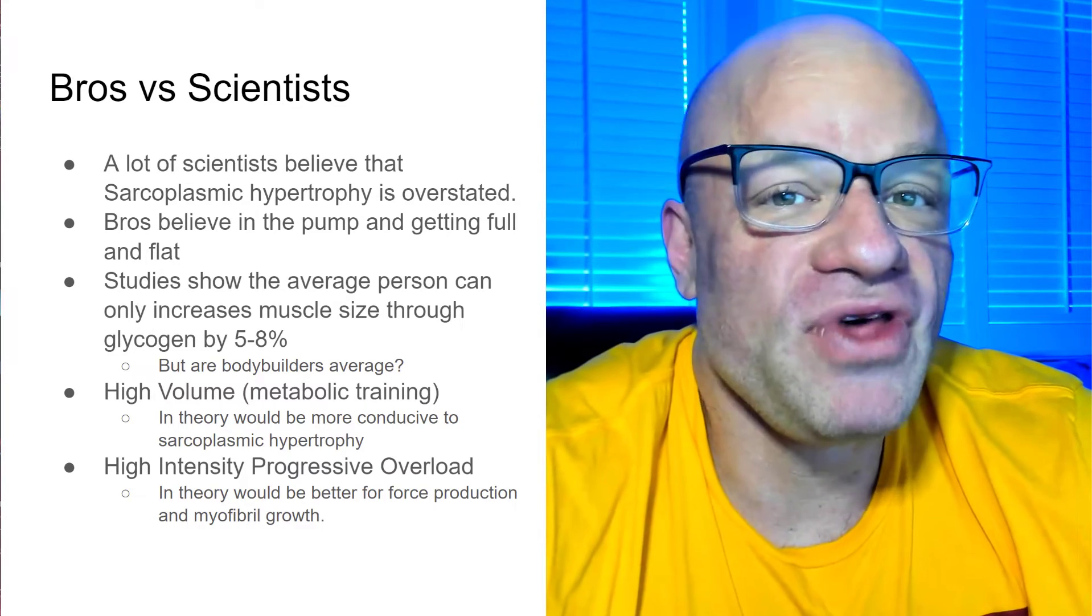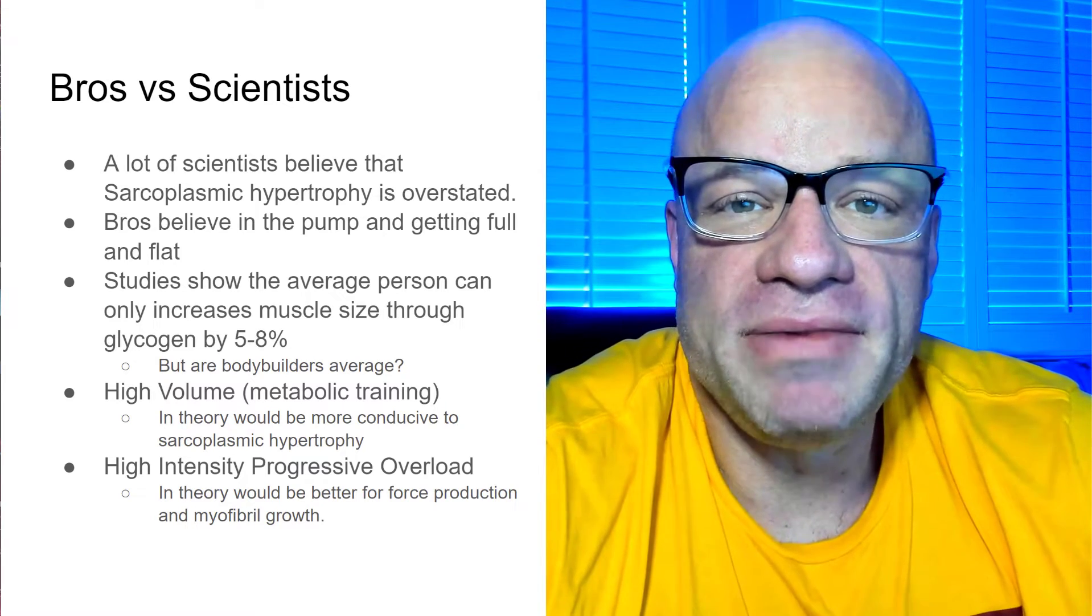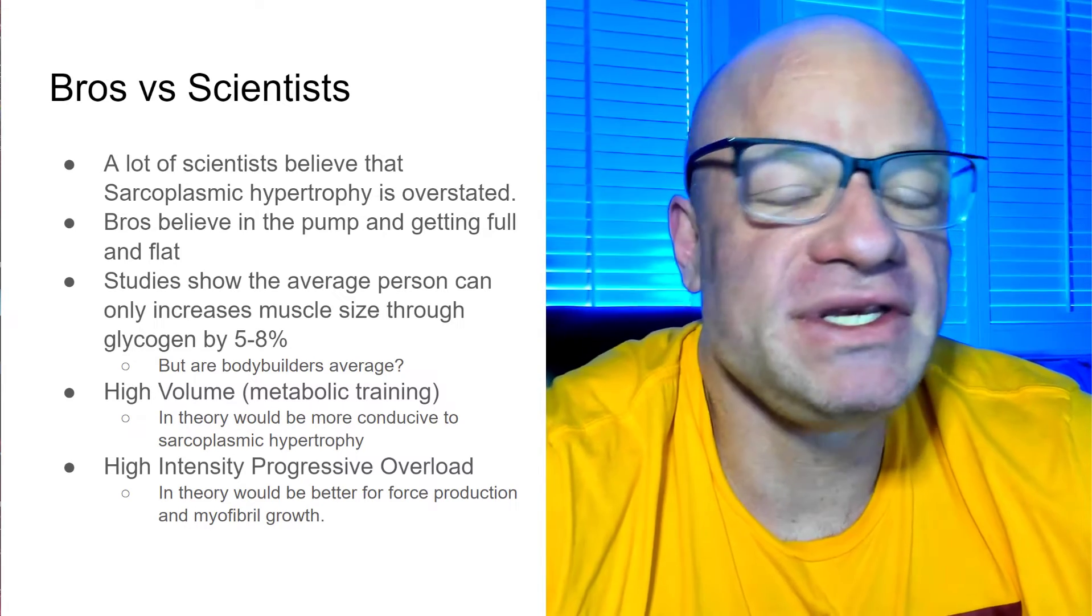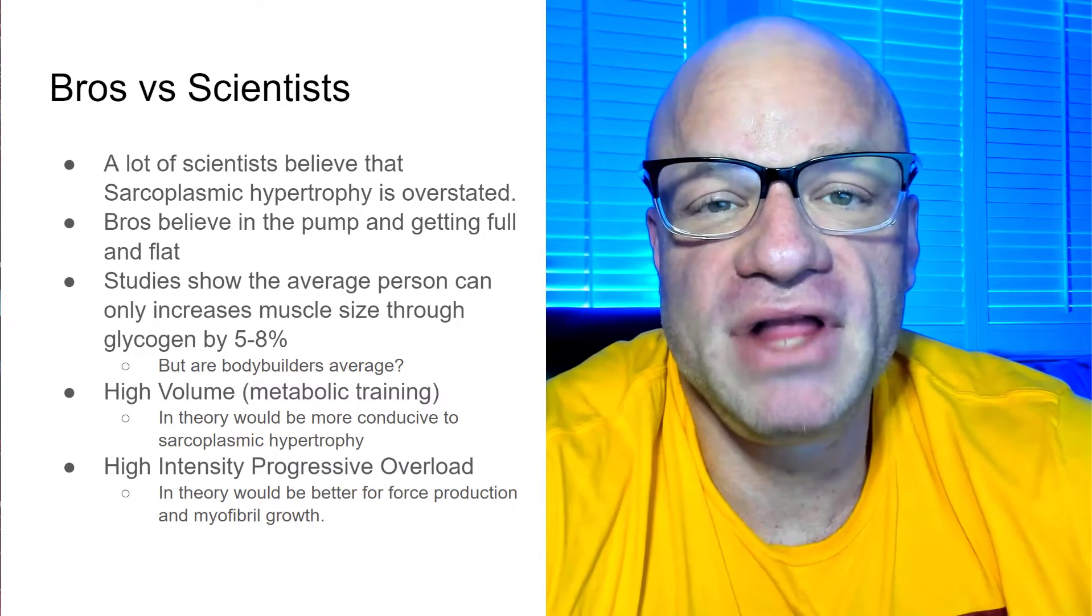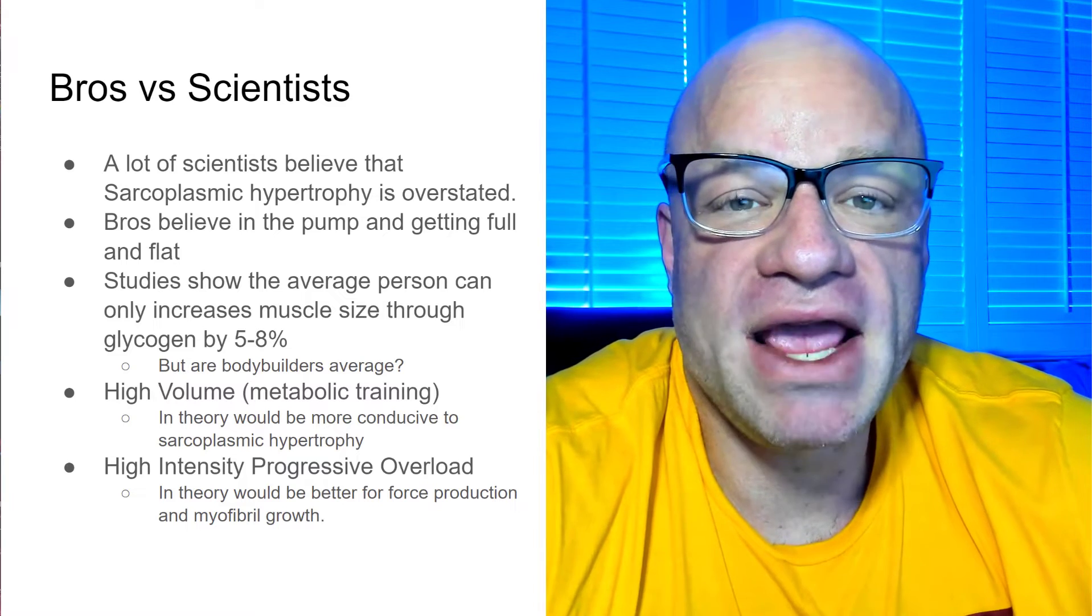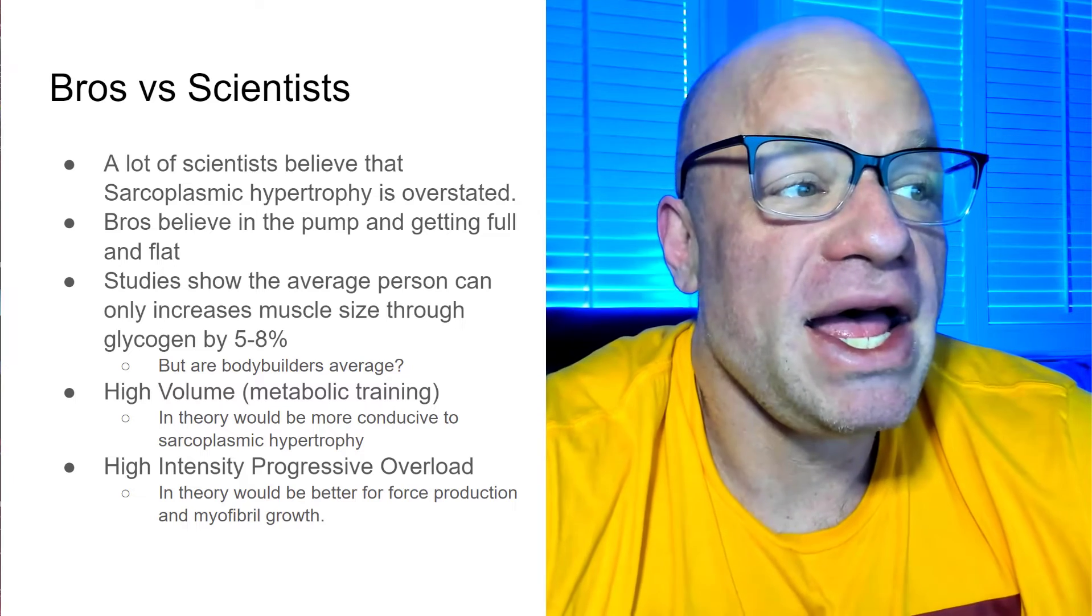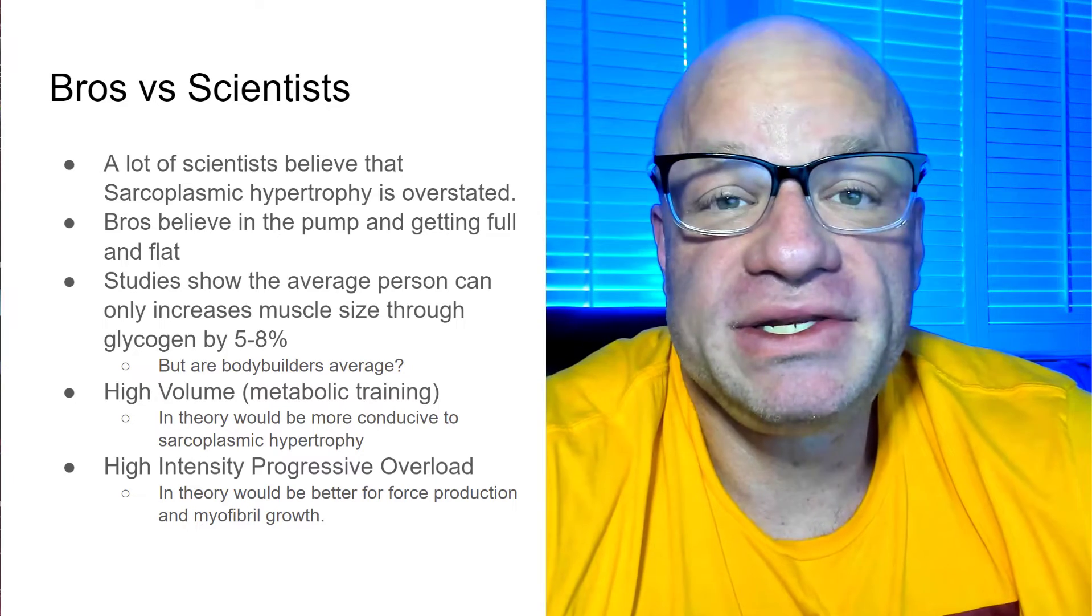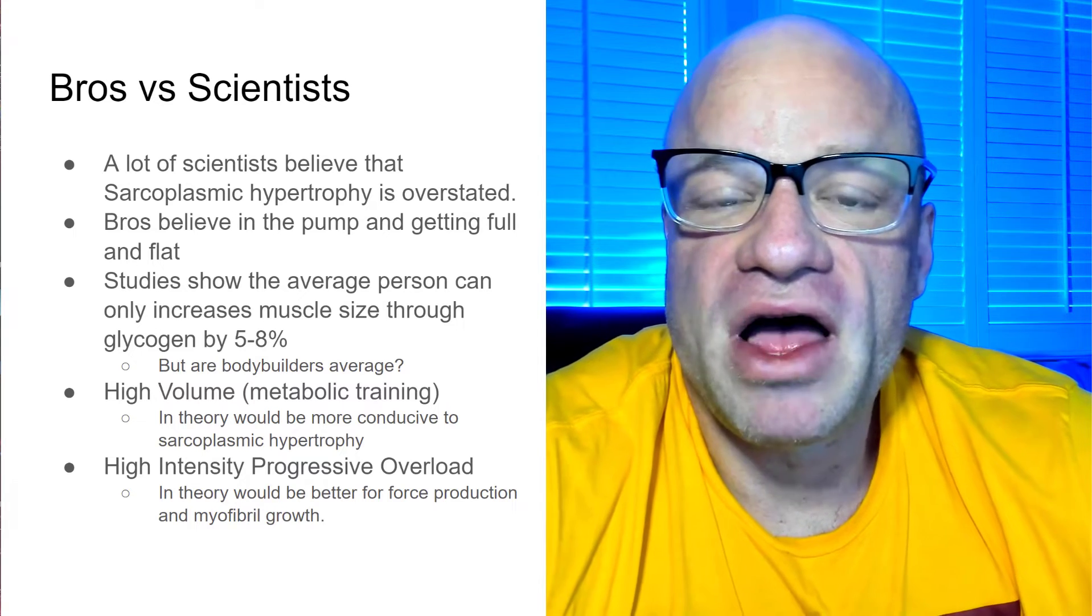Studies have shown that the average person can increase the muscle fiber size between 5% and 8% through glycogen loading. But my thought is, are bodybuilders really average? Even so, you think about 5 to 8%. Let's say that you're completely flat, depleted of glycogen going into a show. You got a 300-pound bodybuilder. Let's just say 150 pounds of that mass is actual muscle tissue.